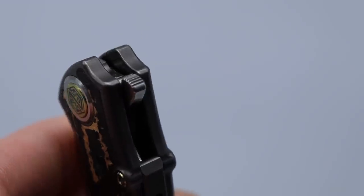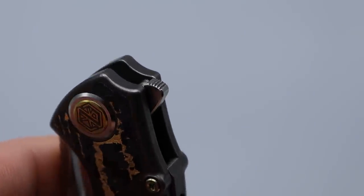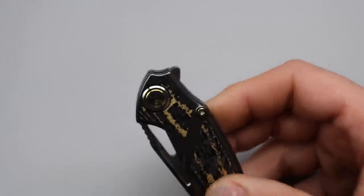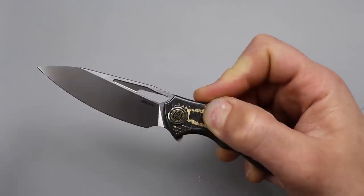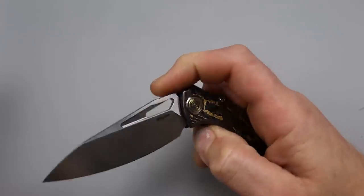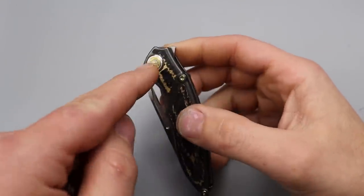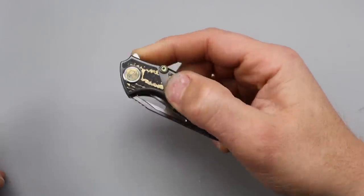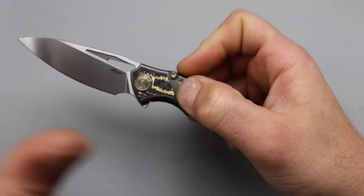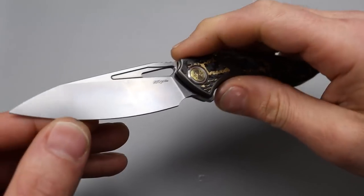Now the flipper is really high compared to the pivot, which is going to give it a ton of leverage and making it very snappy. Even with a light detent, I'm not saying this has a light detent, but when a knife has a light detent, if they have the flipper tab placed right, it's going to flip with a lot of power because of the leverage.